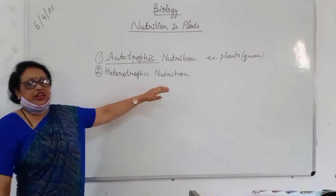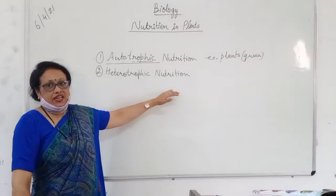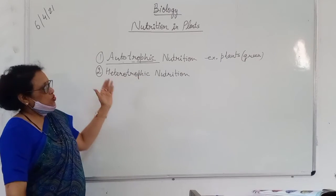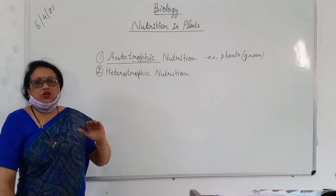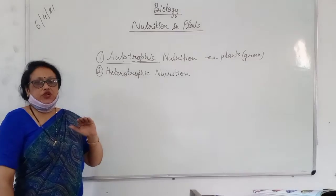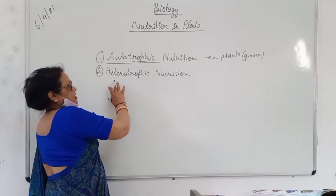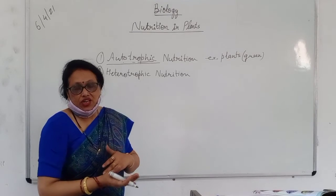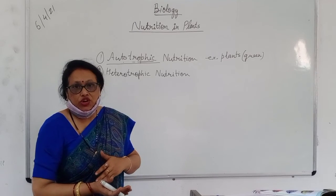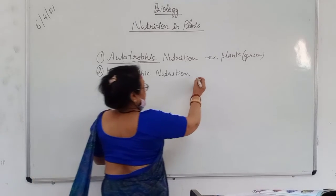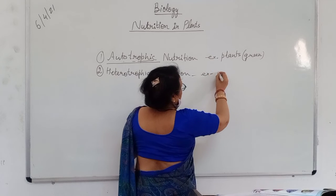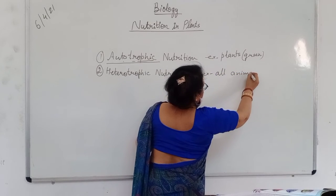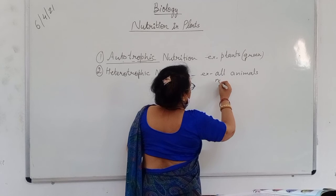Second, heterotrophic nutrition. Heterotrophic means वो जो दूसरों पर depend होते हैं और खुद से अपना food नहीं बना पाते हैं। They are called heterotrophs, and the mode of nutrition is called heterotrophic nutrition. Examples are all animals and non-green plants.